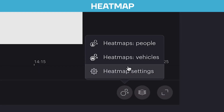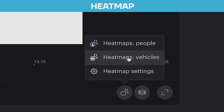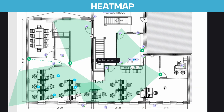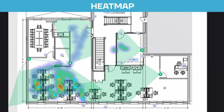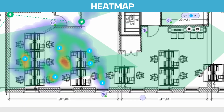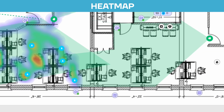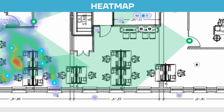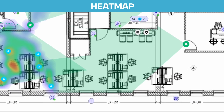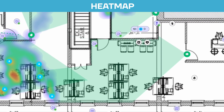From here, you can choose people or vehicles. For our case, let's go people. And boom, a dynamic heat map will automatically be generated. This is based on people's patterns over the past hour, or whatever time frame you've set up.